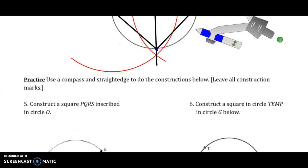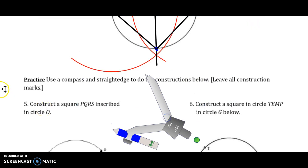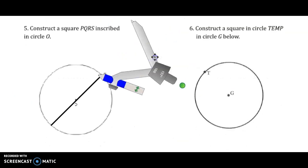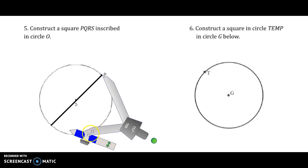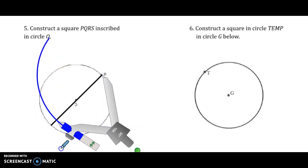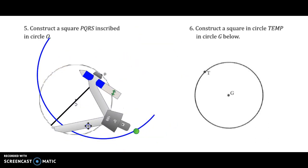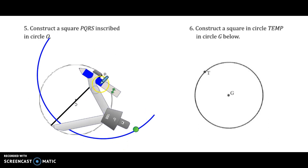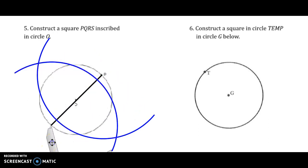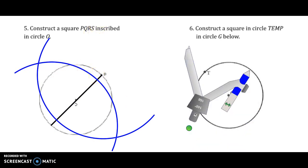The reason I'm doing that is it told us to label our square PQRS specifically, so I need one of the endpoints to be P. The diameter represents one of the diagonals of the square. The diagonals bisect each other and are perpendicular to one another, so we are going to construct the perpendicular bisector of this diameter. Where those two arcs intersect, you can put points, and through those two points you can put a line.